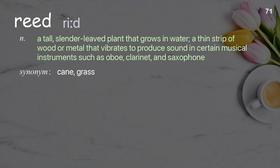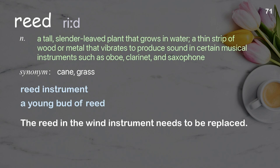Reed. A tall slender-leafed plant that grows in water; a thin strip of wood or metal that vibrates to produce sound in certain musical instruments such as oboe, clarinet, and saxophone. Examples: reed instrument, a young butt of reed. The reed in the wind instrument needs to be replaced.